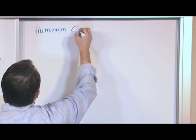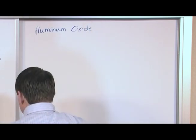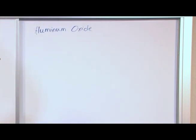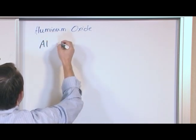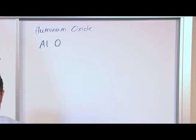Let's look at aluminum oxide. We do the same thing. Aluminum is Al, and oxide is oxygen.